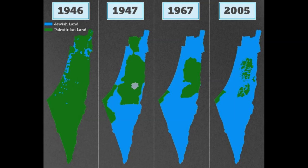After World War I, the Ottoman Empire collapsed and Palestine came under British rule. During this period, the Zionist movement continued to grow in strength and influence.